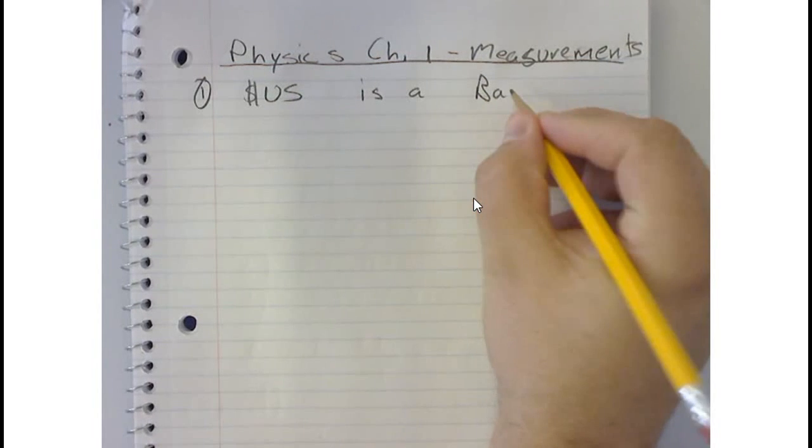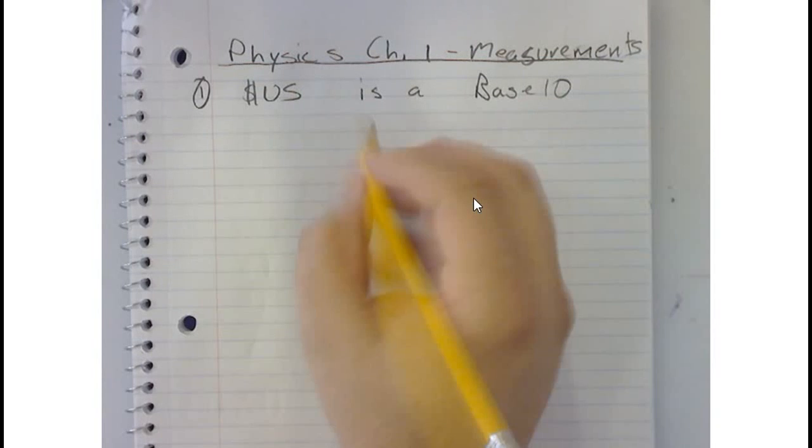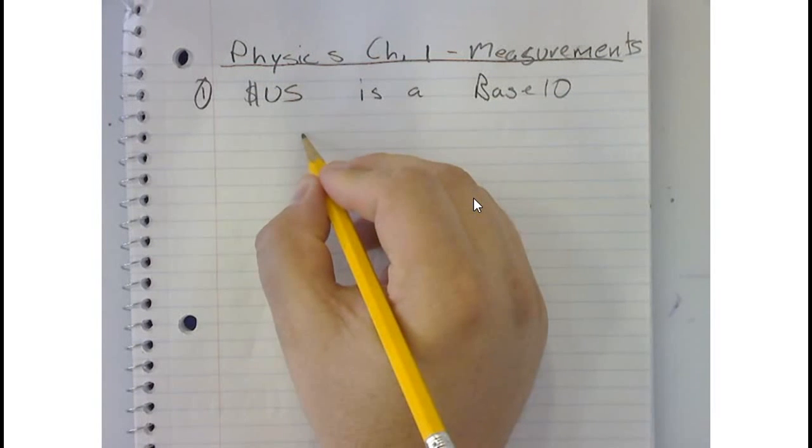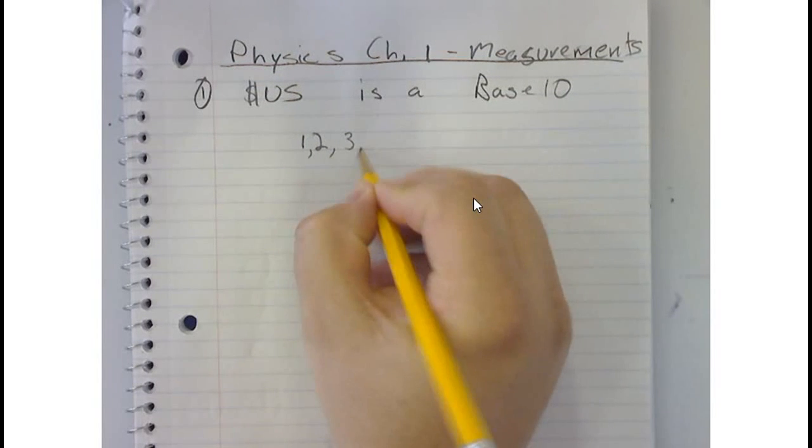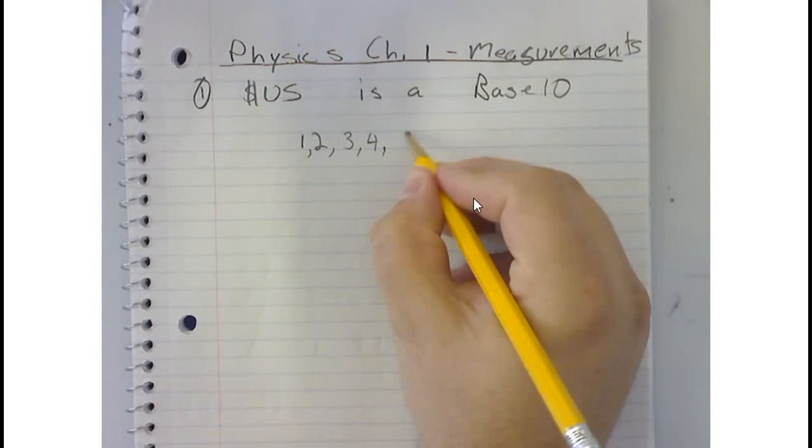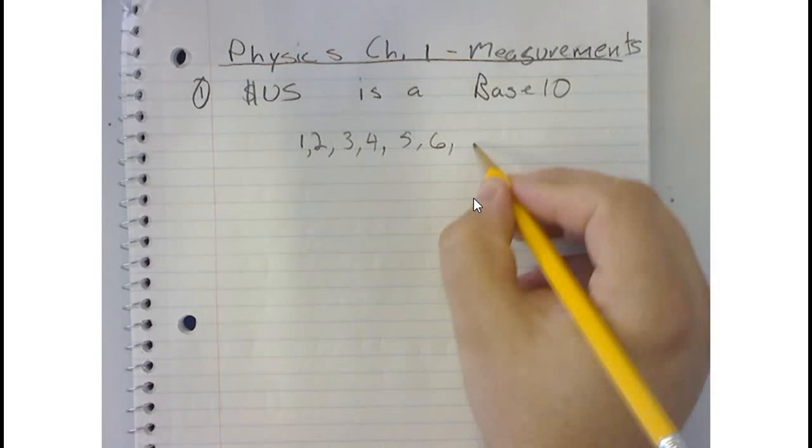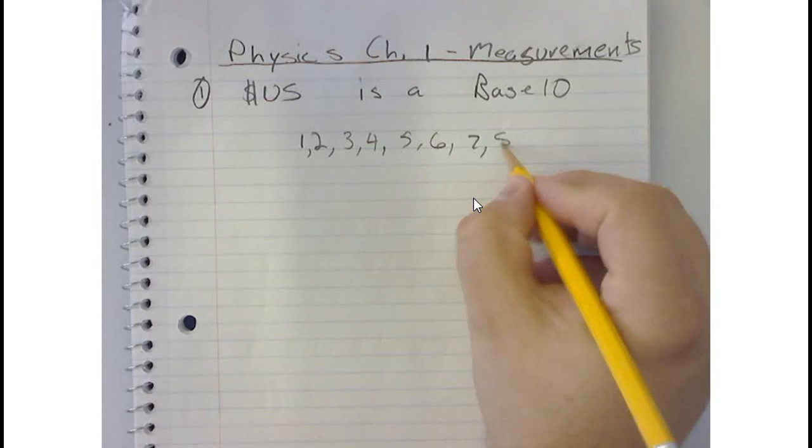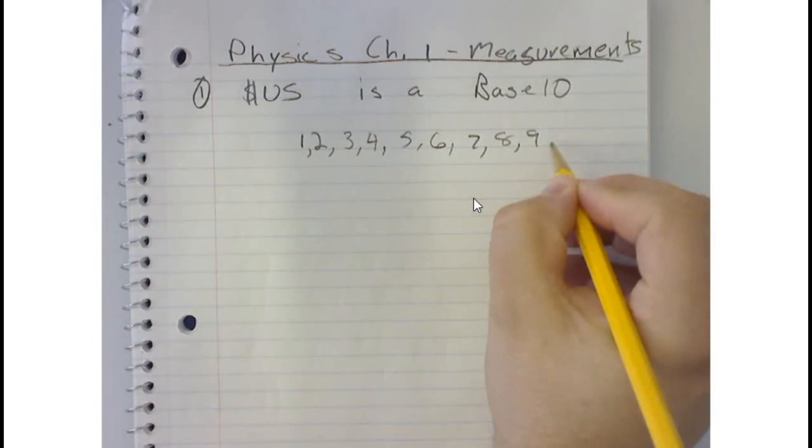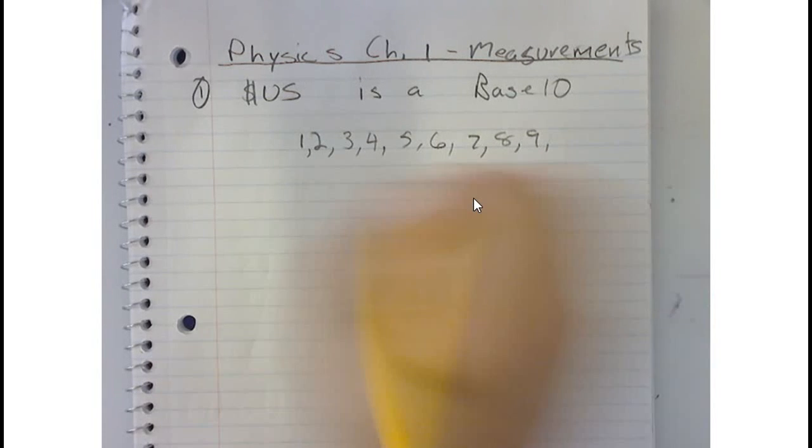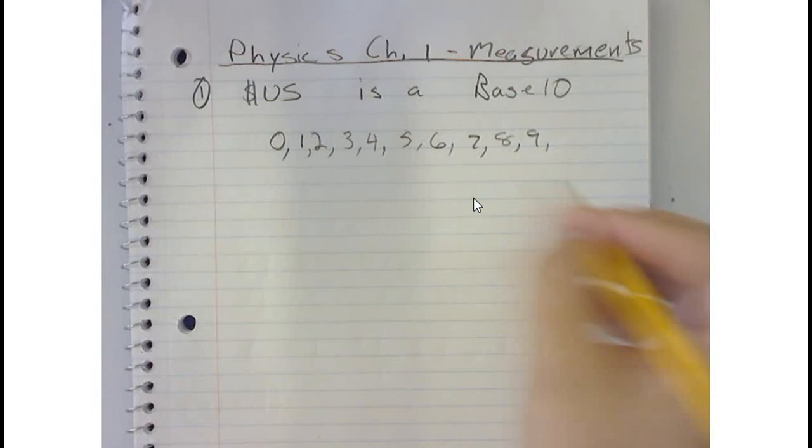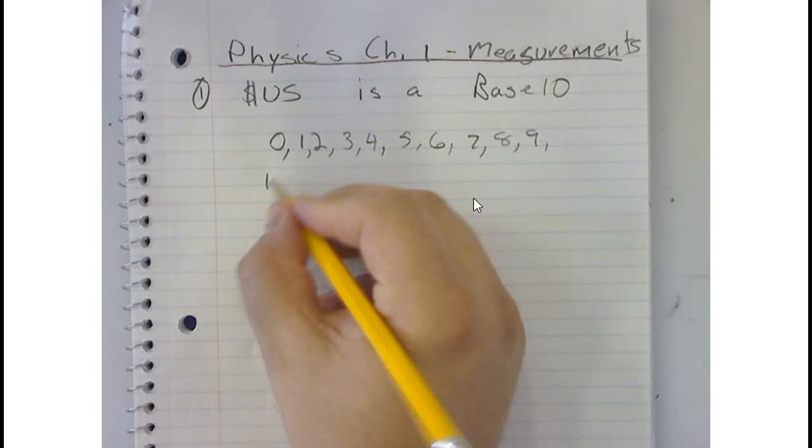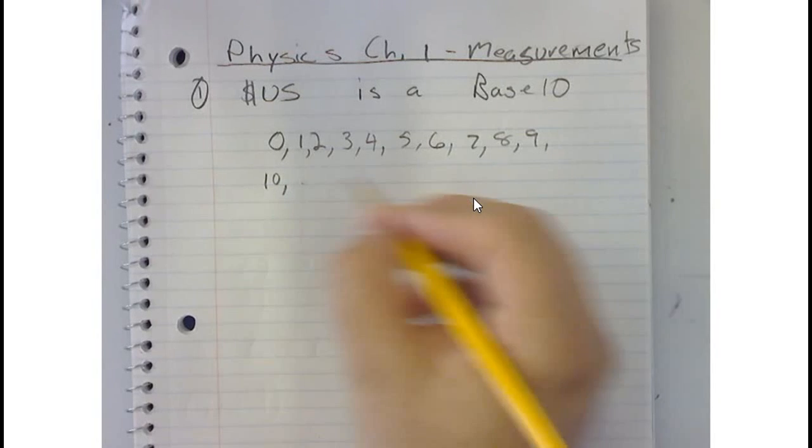In other words, we go 1, 2, 3, 4, 5, 6, 7, 8, 9, and then we start over. Well technically it's 0, 1, and so on, and then the next line would be 10, and then you'd have 19 over here, and then you'd have 20, and so on.